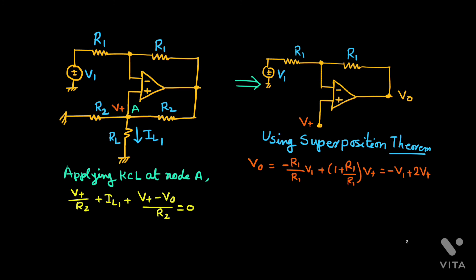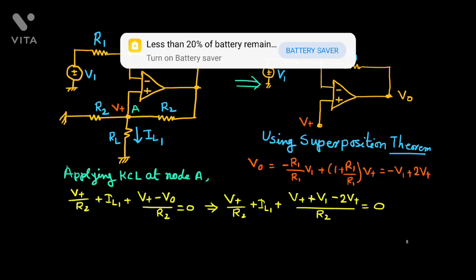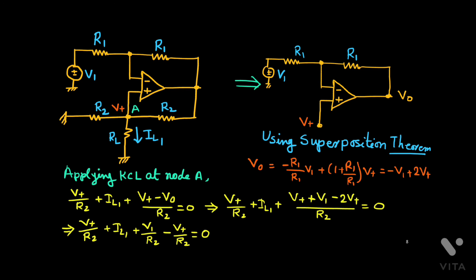Now we apply KCL at this node. The first term is V+/R2, then (V+ minus V0)/R2, and then IL1. Their sum is 0. We replace V0 with (minus V1 plus 2V+). Simplifying: V+/R2 plus V1/R2 minus 2V+/R2 gives minus V+/R2, which cancels with the first term. Therefore IL1 equals minus V1/R2.